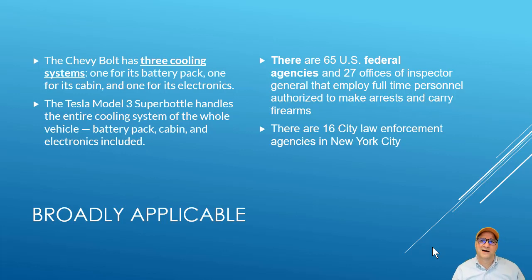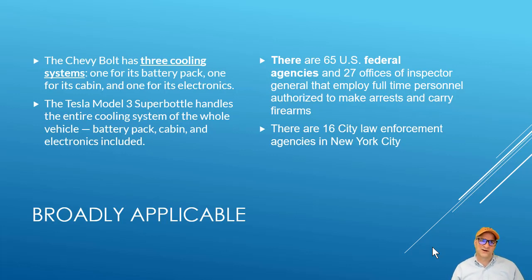Take cars as an example. Tesla is a small company with a small organizational structure, and they decided they wanted a single cooling system for their car - they have something called the super puddle, one pump that handles everything. The Chevy Bolt is built by a traditional organization where different divisions are responsible for different subsystems - one team for the battery pack, one for the cabin, one for the electronics - so they ended up with three cooling systems. Their cooling system structure matched their organizational structure.